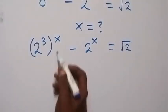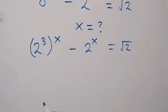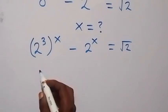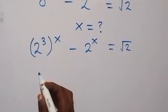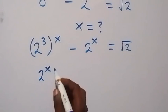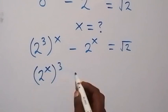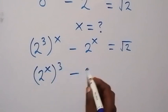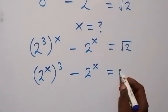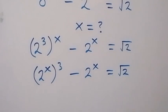From here, we can interchange this power from the law of indices, and this can be written as 2 raised to power x, then raised to power 3, minus 2 raised to power x, then equals to root 2.